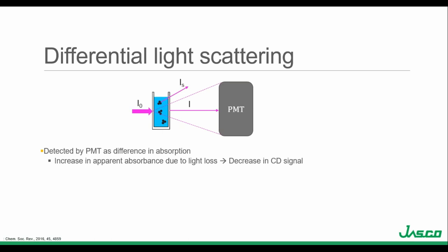A translucent sample could lead to differential light scattering or absorption flattening. Differential light scattering occurs when particulates in the solution are too large relative to the incident light that's scattered. The detector has an acceptance angle describing the maximum angle of incident light that reaches the detector surface. While some light can be scattered and still fall within that acceptance angle, any light outside that range does not reach the detector. The detector can't differentiate between absorbed and scattered light, so it assumes any undetected light was absorbed, creating apparent absorption that decreases the CD signal.